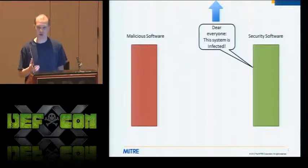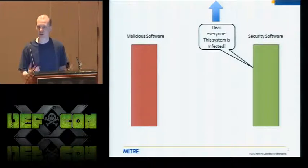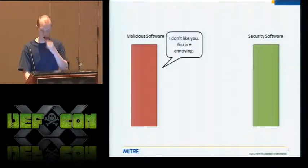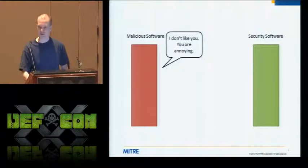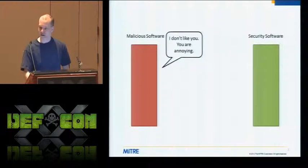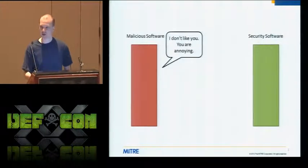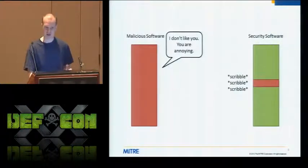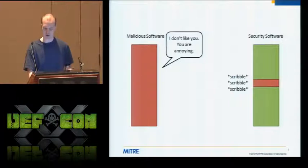Knowing when someone is compromising your code and modifying it. The security game today involves malicious software and security software. The security software is supposed to detect the presence of malicious software and hopefully get rid of it. In a future world where security software actually impedes the attacker in a meaningful way, the security software itself will become the target of the malicious software. So they need to keep doing their job, and attackers can go after the security software directly — using code integrity attacks.